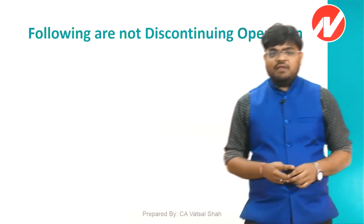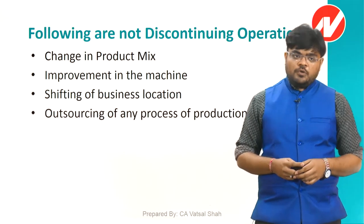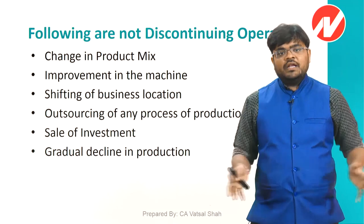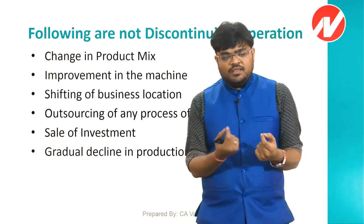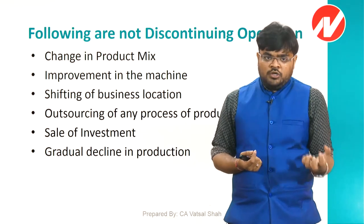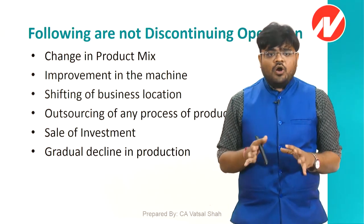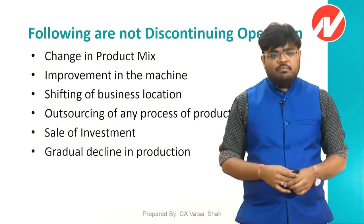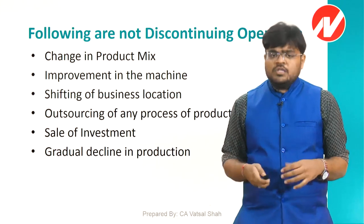AS-24 also prescribes examples of activities that do NOT qualify as discontinuing operations: first, changing product mix; second, improvement in machinery; third, shifting of business location; fourth, outsourcing of production process; fifth, sale of investment; and sixth, gradual decline in production. These are the key exclusions. For example, changing product mix — if a segment had two products and you gradually reduce production of one and increase the other, that is not a discontinuing operation. Similarly, replacing old machinery with new improved machinery is never considered a discontinuing operation.